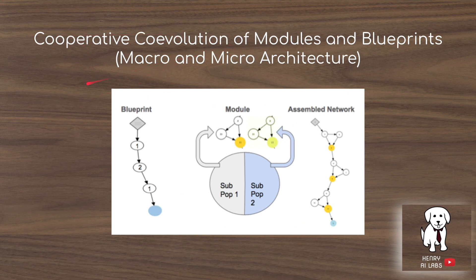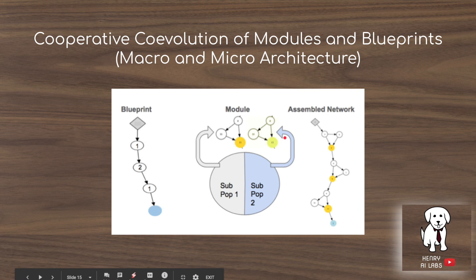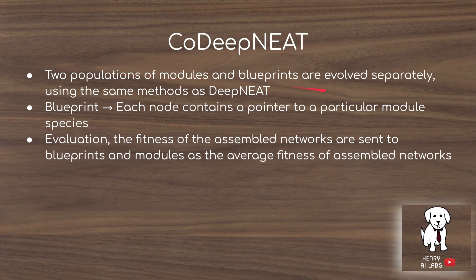The idea of cooperative coevolution, or CoDeepNEAT, is to include both macro and microarchitecture. The original DeepNEAT would just design a blueprint where nodes are either convolutions or max pooling with specific details defined by hyperparameters. CoDeepNEAT keeps this blueprint and adds another population — sub-modules, small deep neural networks that process just one portion of the network. These are sampled together to form the overall assembled network. The blueprint has nodes containing pointers to module species, and in evaluation they're assembled together with fitness evaluated based on the average fitness of assembled networks in which the module is included.